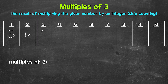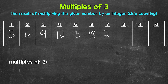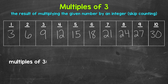Then we have 3 times 3, that's 9. 4 times 3 is 12. 5 times 3 is 15. Then we have 6 times 3, that's 18. 7 times 3 is 21. 8 times 3 is 24. 9 times 3 is 27. And 10 times 3 is 30. And those are the first 10 multiples of 3.